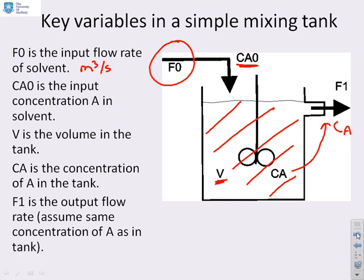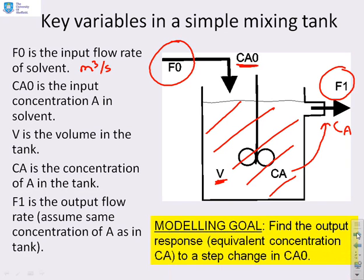F1 is the rate at which fluid leaves the tank, and we have made an assumption that in general F0 equals F1. Our goal is to find how CA, the output concentration, depends upon the input concentration CA0. The model may also depend upon other variables such as the volume, which we will unpack as we go.